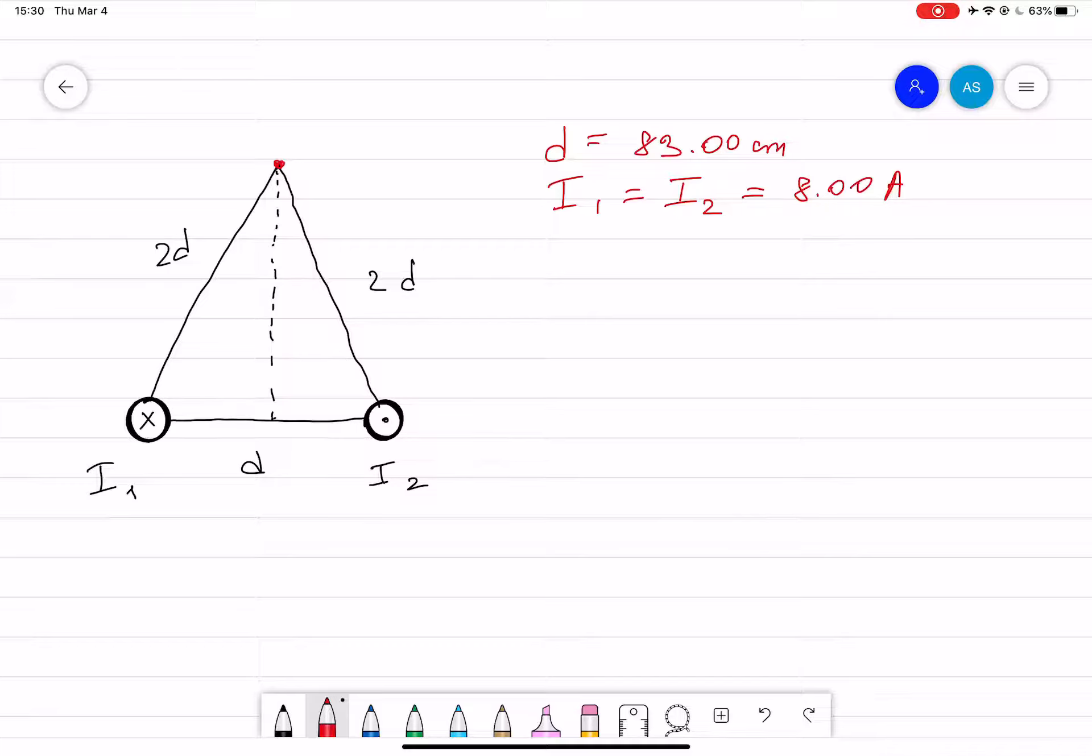Now we have to use the right-hand rule in order to find the magnitude and direction of the magnetic field that is coming from current 1 and current 2. Since we know that current 1 and current 2 are equal, then we can say that the magnitude of B1 will be equal to B2. Now it's in magnitude, not direction.